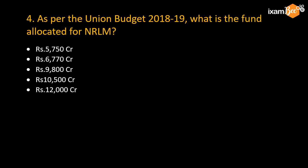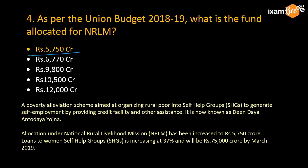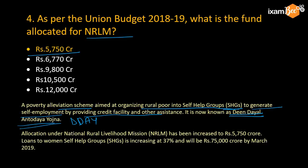Question number 4: as per the Union Budget of 2018-19, what is the fund allocated for NRLM? NRLM — National Rural Livelihood Mission — is a very important program of the government for rural development. The answer is 5750 crore. NRLM is very important for alleviation of poverty and organizing rural poor into self-help groups. These SHGs generate self-employment by providing credit facilities. This is also called Deen Dayal Antyodaya Yojana (DDAY). Loans to SHGs are increasing and the total outstanding will reach around 75,000 crore by March 2019.